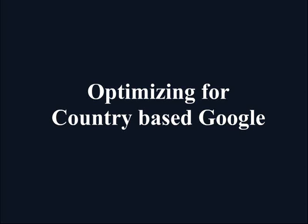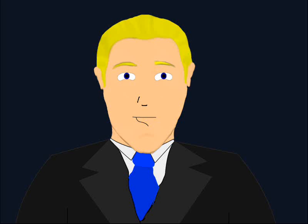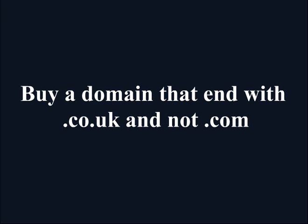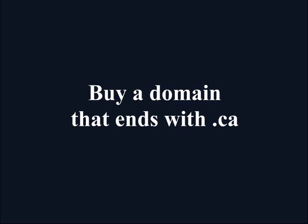Optimizing for country-based Google. Targeting a country-based Google search engine is very simple. Everything we've mentioned or are going to mention will remain the same except the domain. To target a country-based Google, you buy a country-based domain name. For example, if you're targeting google.co.uk, then buy a domain that ends with .co.uk and not .com. And if you're targeting google.ca, then buy a domain that ends with .ca and not .com.